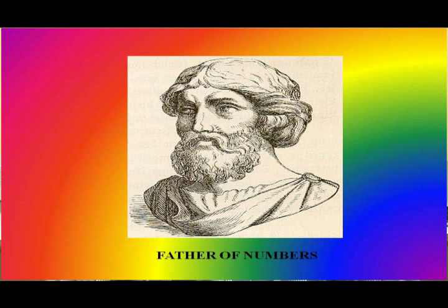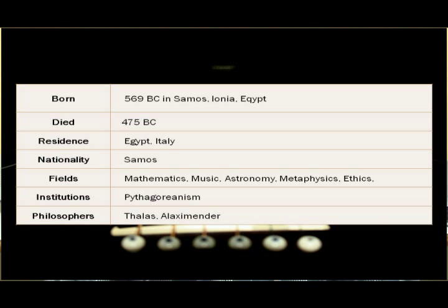Pythagoras was a great mathematician born on 569 BC in Samos, Ionia. His father was Minascares, a merchant from Tyre, and his mother Pythais, a native of Samos. He is often described as the first pure mathematician who has contributed immensely towards the development of mathematics. He died in 475 BC. He is the father of numbers.